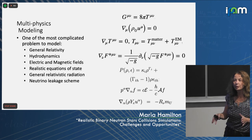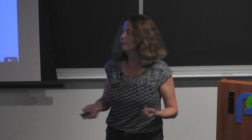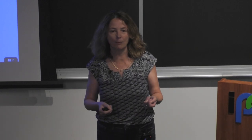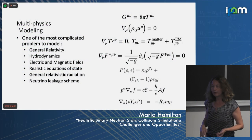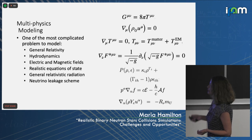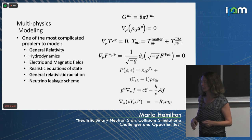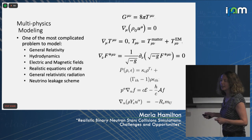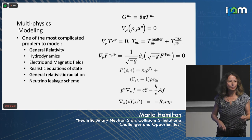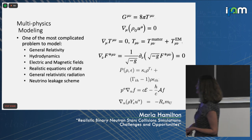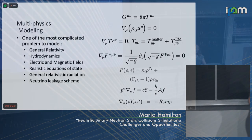Numerical relativity simulations of binary neutron star mergers are very complicated — more so than binary black holes — because they involve multi-physics. It's one of the most challenging problems in the field. You have general relativity, dynamical spacetimes, hydrodynamics, electric and magnetic fields, a realistic equation of state, radiation transport, and neutrino leakage — a lot of equations that need to be coded.